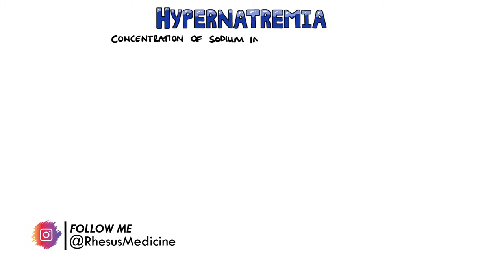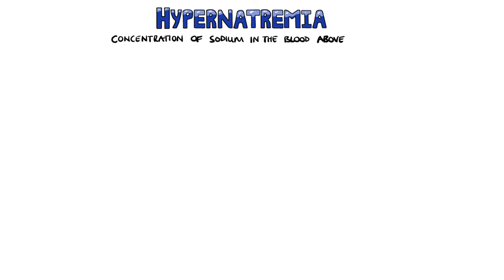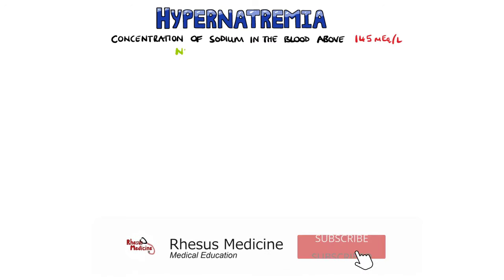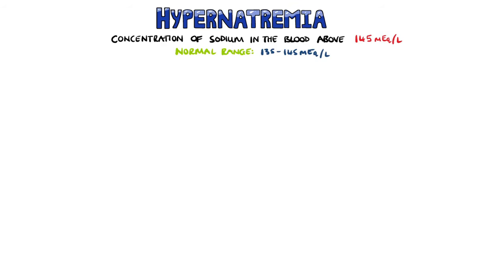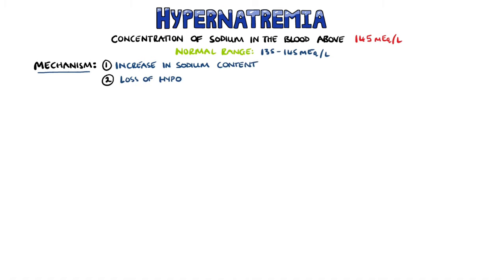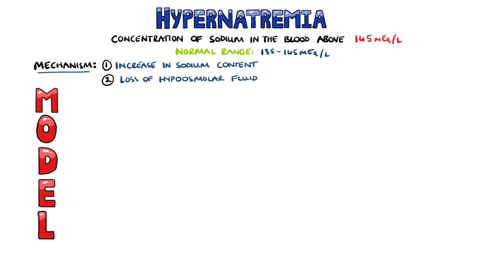Hyponatremia is a condition where the concentration of sodium in the blood is too high. The normal range is between 135 and 145 mEq per litre. Hypernatremia is rarer than hyponatremia and carries a higher mortality, even as high as 40-60%. The causes come down to either an increase in the sodium content or a loss of hyposmolar fluids. The mnemonic MODEL can help you remember them.